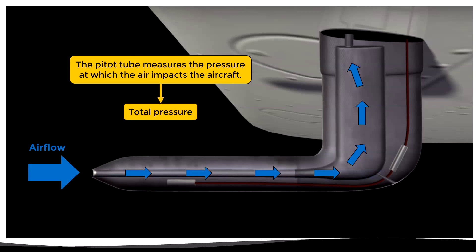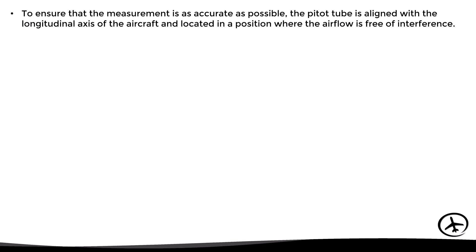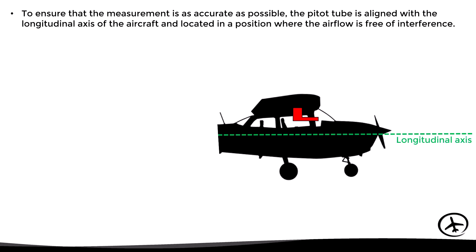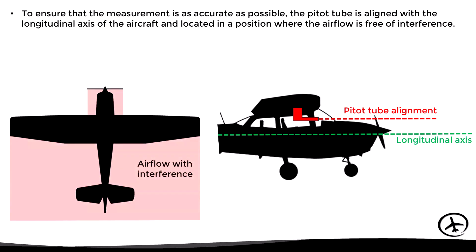The impact pressure measured by the pitot tube combines the static pressure and the dynamic pressure, meaning it measures the total pressure. To ensure an adequate measurement, the pitot tube must be aligned with the longitudinal axis of the aircraft and located in a part where the airflow is free from any interference — because when an aircraft moves through the air, the airflow is altered by parts of the plane like the propeller or the wings. Therefore the pitot tube should be located so it is exposed to the proper free airflow.